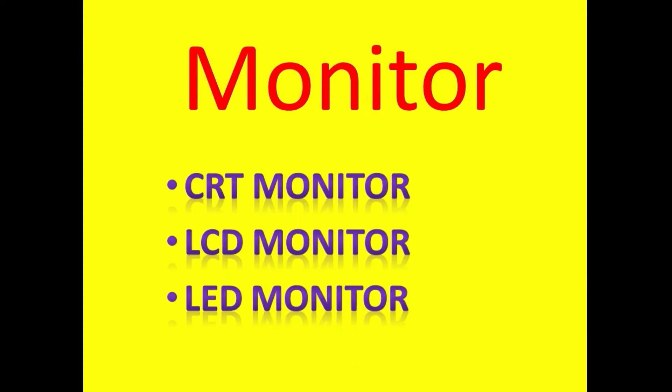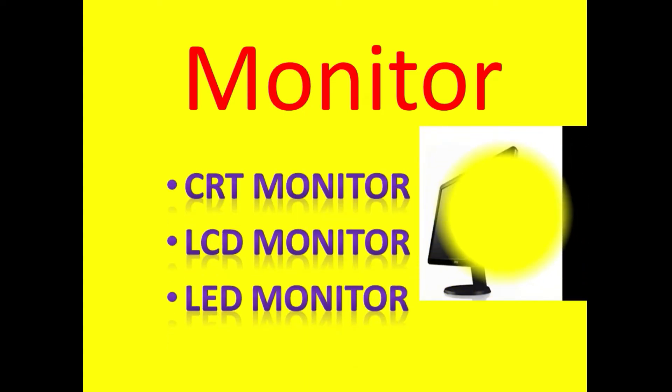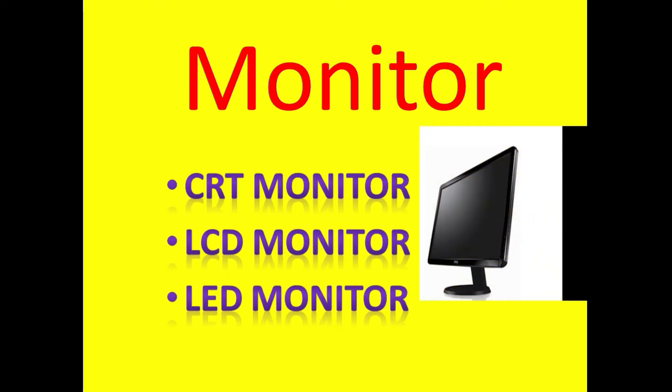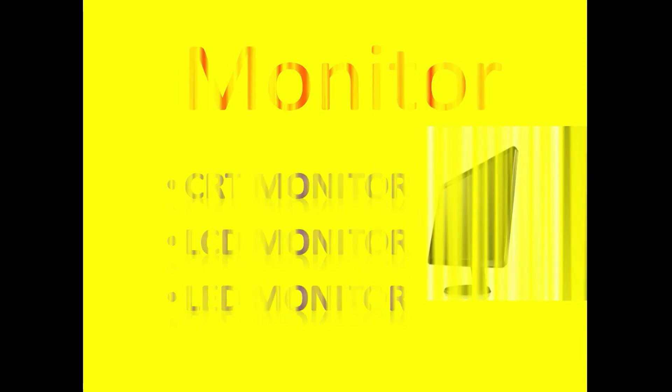Next example is monitor. Monitor is an output device. There are three main types of monitor: CRT monitor, LCD monitor, and LED monitor. It shows work being done by the computer.